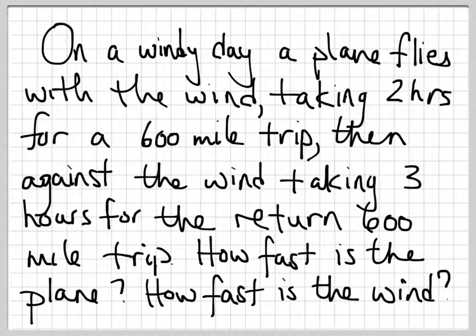So here's the next problem. It's a windy day and there's a plane flying overhead. On the trip out, it's flying with the wind and it takes 2 hours to go 600 miles. Then it flies against the wind and takes 3 hours to go the same 600 miles. So the question is, how fast is the plane and how fast is the wind?